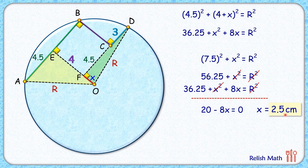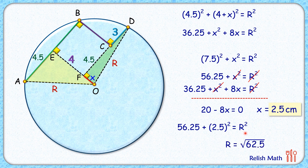Putting x = 2.5 back into the second equation: 56.25 + (2.5)² = R². Solving gives R = √62.5 cm, which simplifies to R ≈ 7.91 cm. That's our answer. I hope you enjoyed all 3 solutions. I will see you in the next video — till then, bye!